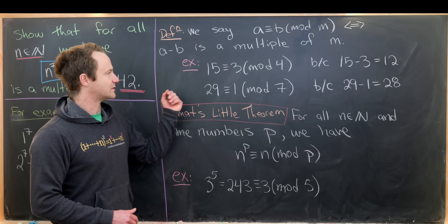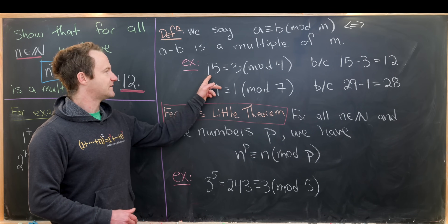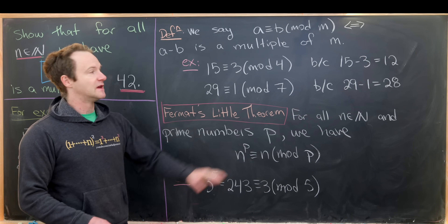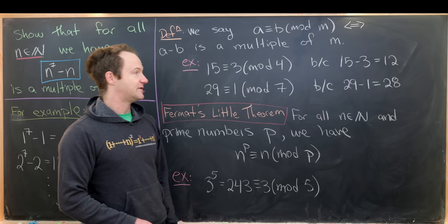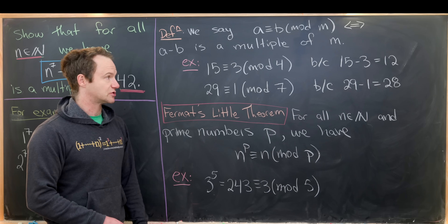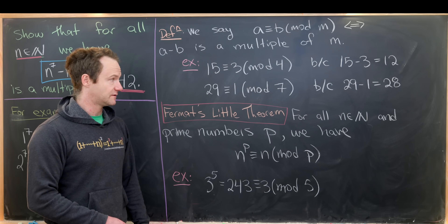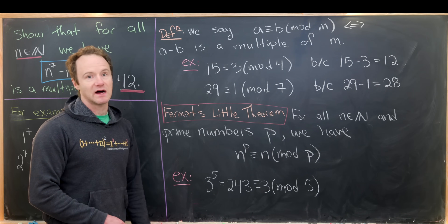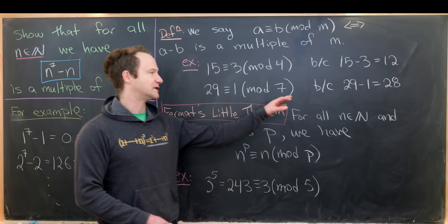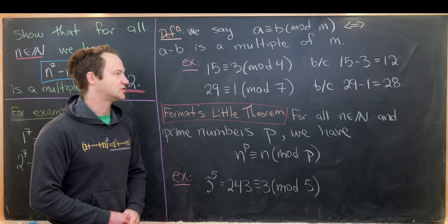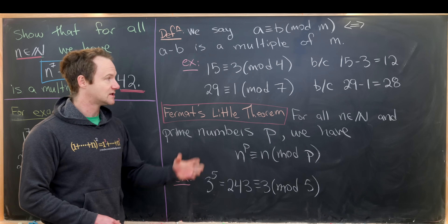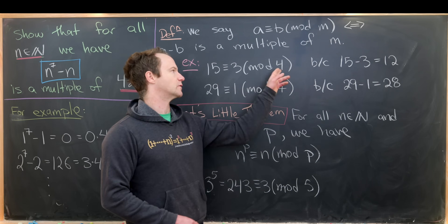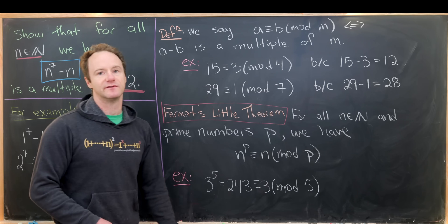So let's look at some examples. 15 is congruent to 3 mod 4, because 15 minus 3 is equal to 12. And 29 is congruent to 1 mod 7, because 29 minus 1 is 28. 28 is a multiple of 7, just like 12 was a multiple of 4.